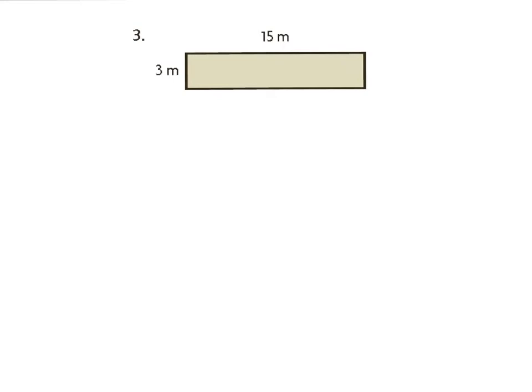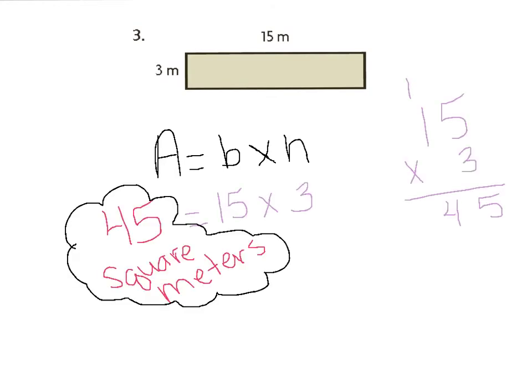Here's number three in your GoMath book. We have a height of 3 meters and a base of 15 meters. Remember, our area formula is Area equals base times height. Go ahead and work on number three and press play when you're ready to go over the answer. You should have multiplied 15 times 3, which gives 45 square meters for the area.